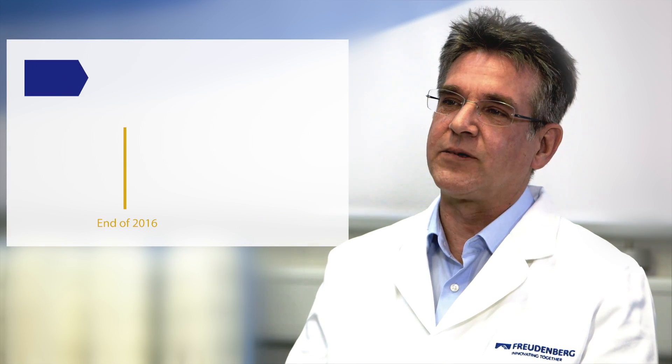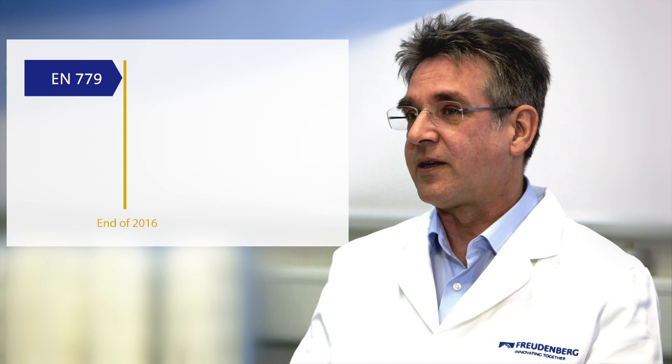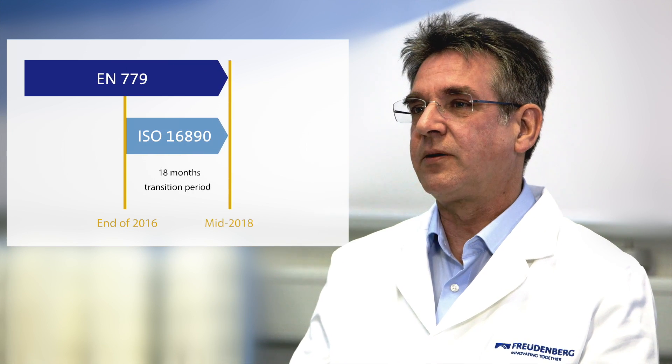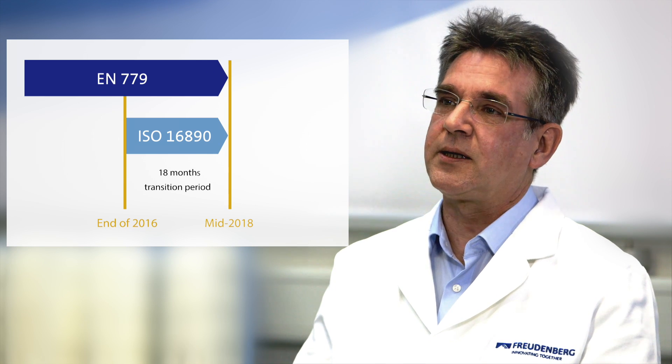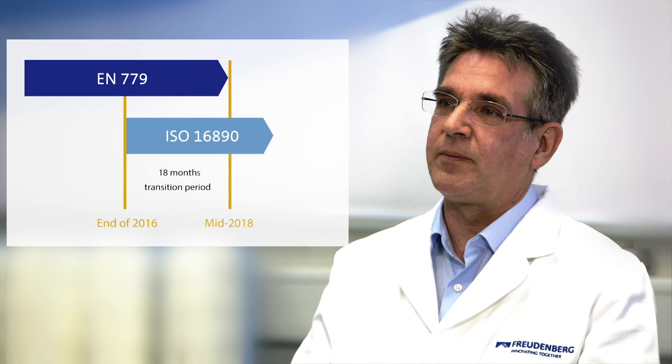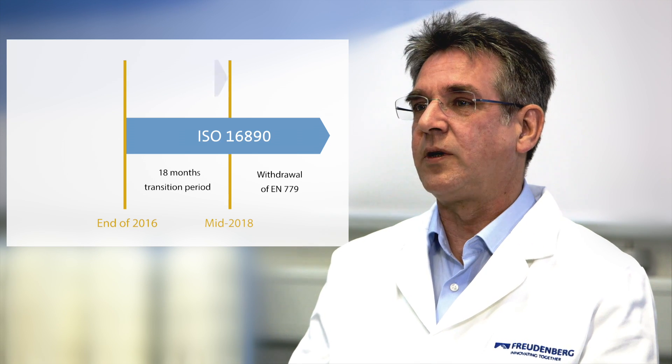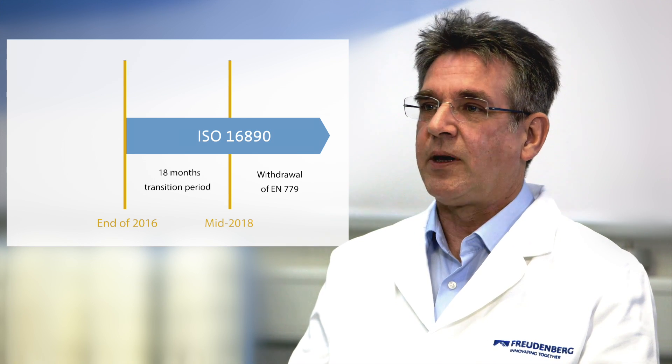What is the time scale for the introduction of the new standard? I expect the new standard to be published in the second half of this year, at the latest by the end of 2016. There will then be a transition period between the old and the new standard, meaning both standards will be valid at the same time. EN 779 will then be finally invalid by the middle of 2018, as the market will need that time to adapt, with all the standards that currently refer to EN 779.